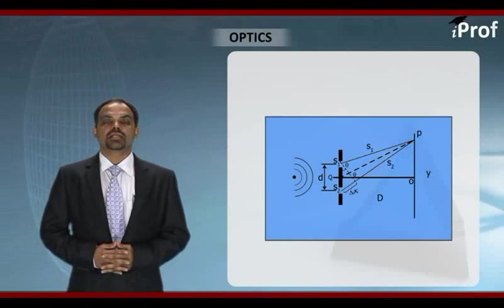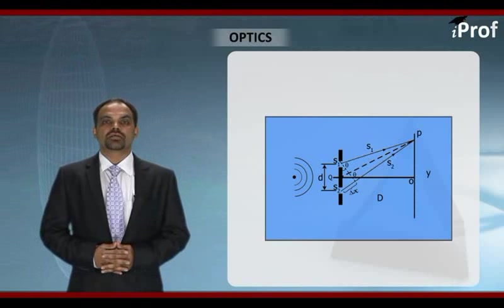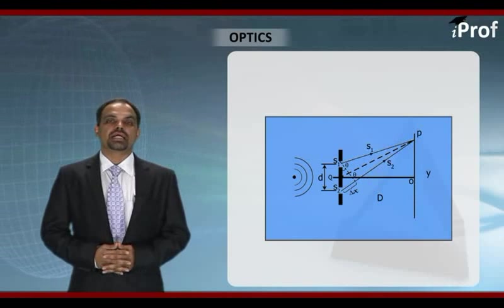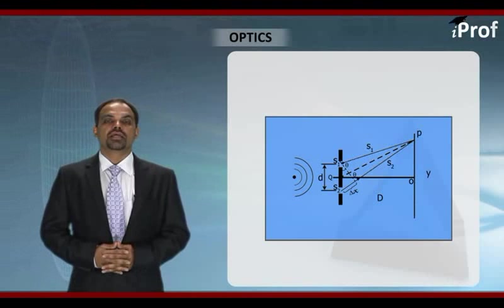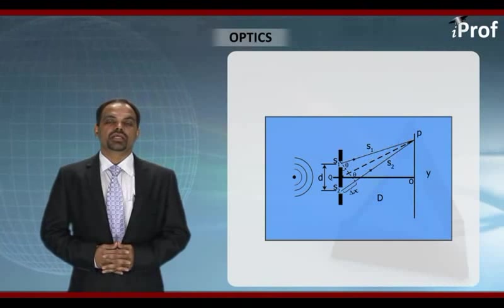We have seen how to calculate path difference. Path difference calculation will help us to know what are the points of constructive interference, what are the points of destructive interference. The whole information of interference pattern, that is redistribution of energy, will be obtained through path difference analysis. So let's go slowly into this very famous experiment.